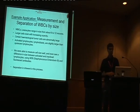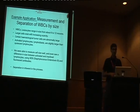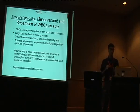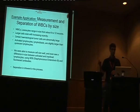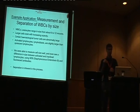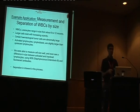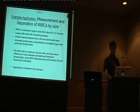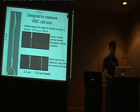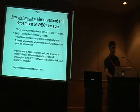Larger cells exist with increasing scarcity — things like macrophages. Some tumor cells are abnormally large. Activated lymphocytes, as they revert to a blast or lymphoblast state, can get bigger too — and we've actually seen that. We can add an activating chemical like staphylococcal enterotoxin B, which causes lymphocytes to activate, and you get a shift in the size of your CD3 population — or it could be CD4. And separation is inherent in this process.